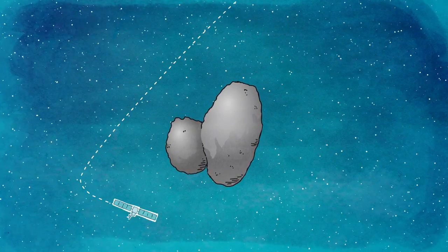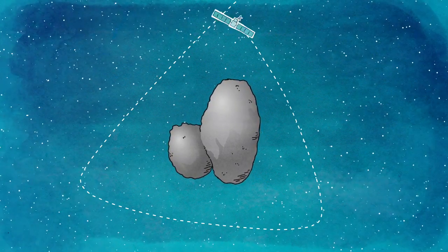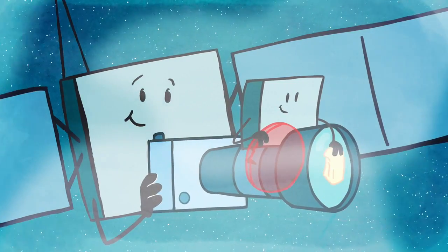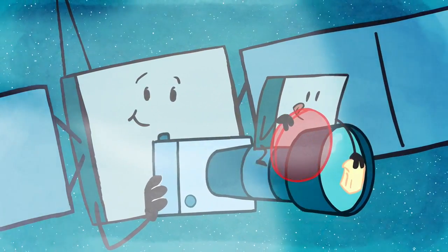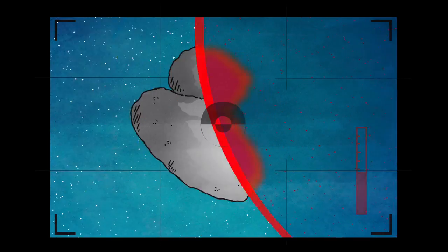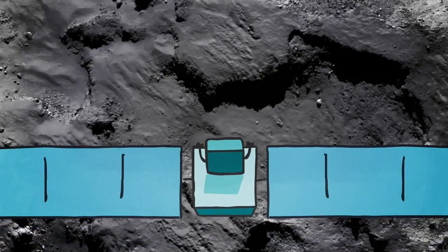Rosetta had to steer several times to get closer and closer to the comet. The closer Rosetta and Philae got to this strange world, the more wonders they discovered on its surface.